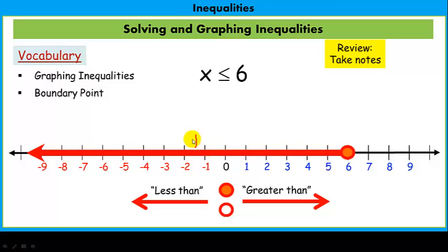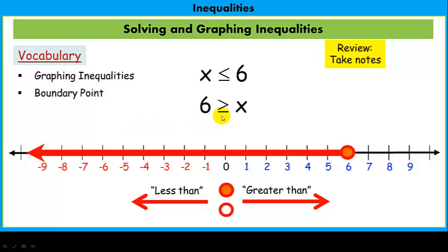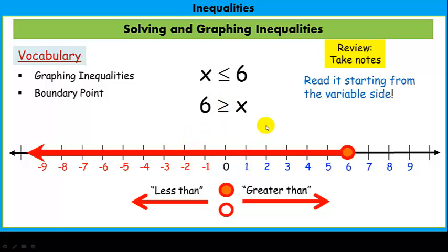We represent all the solutions with a big fat arrow. Now, some students have been told that wherever the inequality symbol points is where the arrow points — but that doesn't work in every case. Instead, read the inequality starting from the variable side. The solution is all numbers that are less than 6, so we know the arrow goes to the left. Less than goes left, greater than goes right — just start reading from the variable.